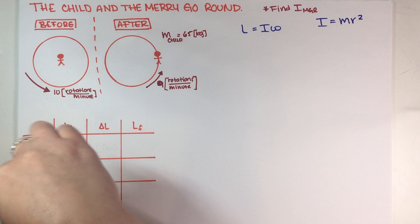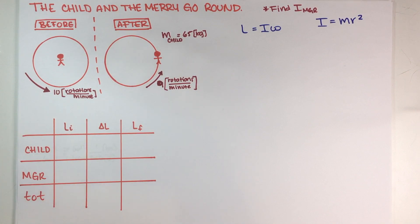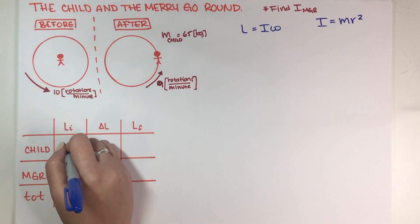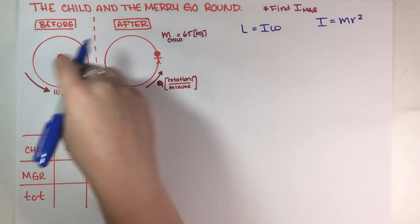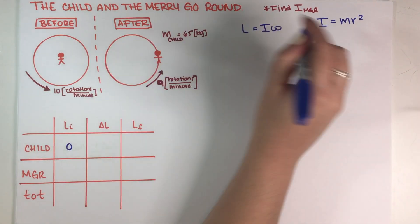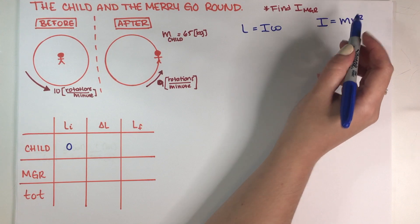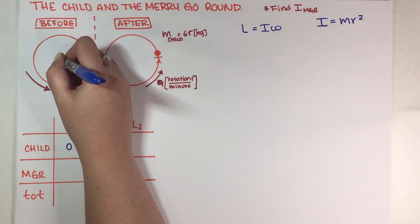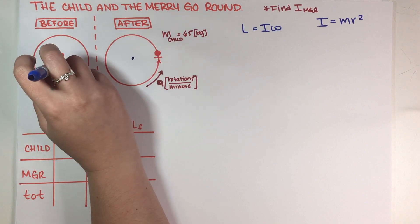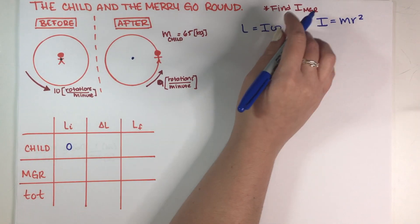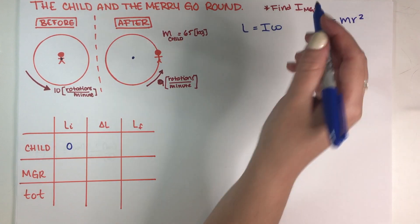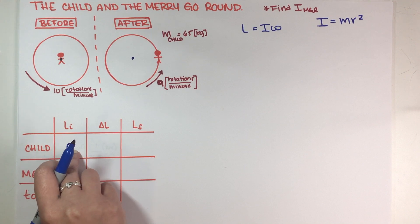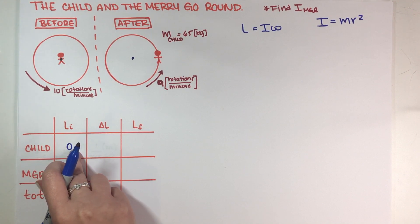At the very beginning of the problem, the child does not have any angular momentum — because even though the child has some angular velocity, the moment of inertia of the child is equal to zero. The pivot point of the merry-go-round is at the center of the circle, so if the child is at the center, r = 0, meaning I = 0. So the child does not have an initial angular momentum.